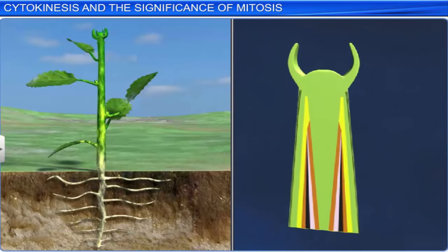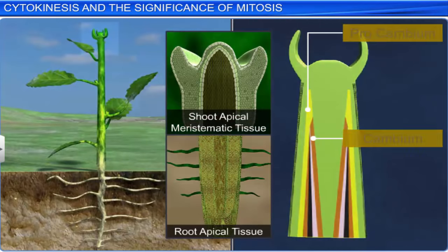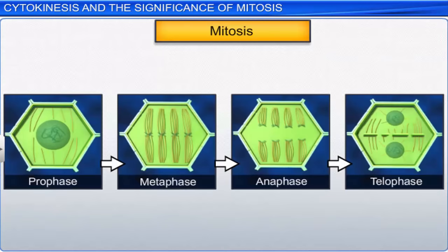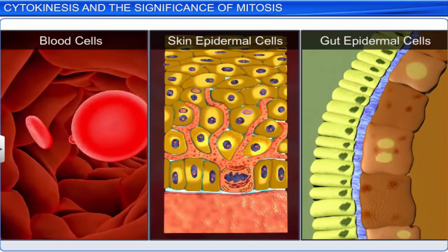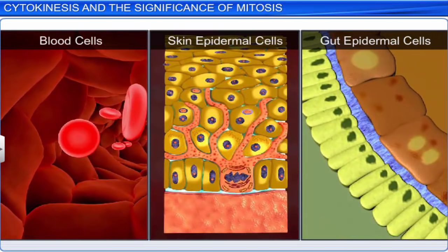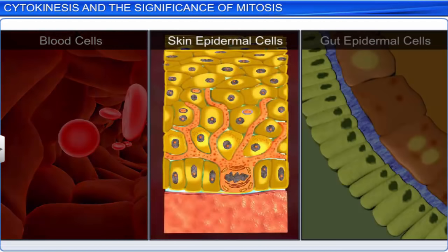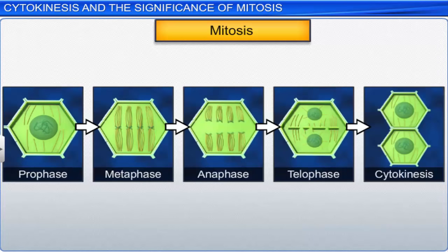In plants, meristematic tissues — namely the apical and the lateral cambium — divide actively by mitosis, leading to the continuous growth of the plant throughout its life. Mitosis also restores the nucleocytoplasmic ratio, which is disturbed as a cell grows. Moreover, mitosis results in the formation of new cells which replace dead cells. For example, blood cells and cells in the upper layers of the epidermis in the skin and the lining of the gut are continually replaced. Thus, mitosis is usually accompanied by cytokinesis and plays a vital role in the growth of organisms.